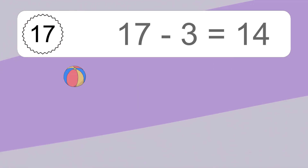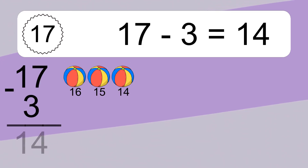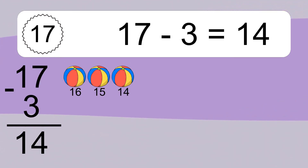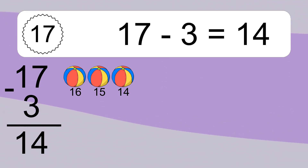17 minus 3 equals what? 17 minus 3 equals 14. Let's count it: 16, 15, 14.